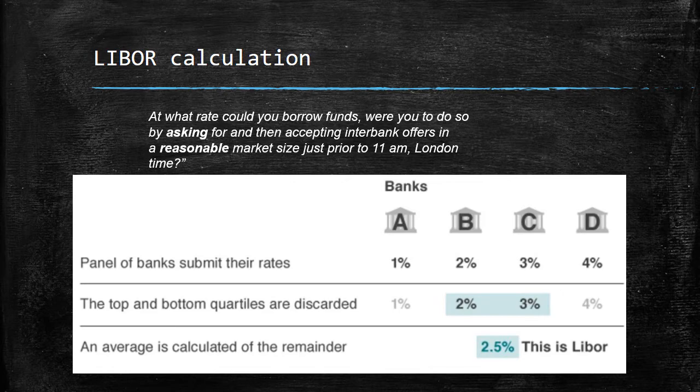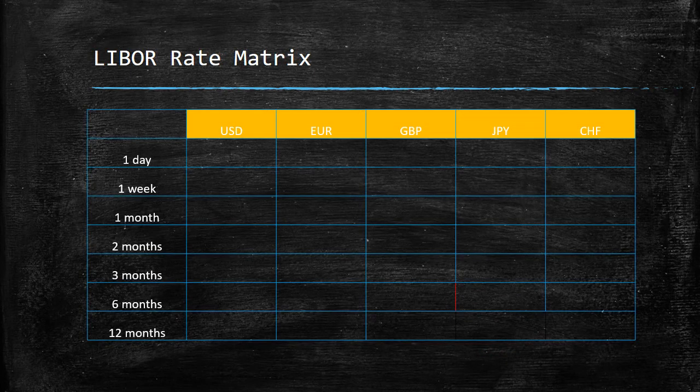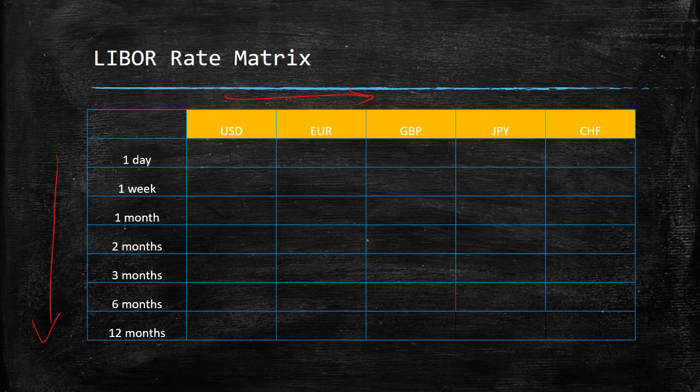To make it more complex, LIBOR is quoted in five different international currencies: USD, Euro, GBP, Japanese Yen, and Swiss Franc (CHF). Additionally, rates are calculated across different maturities — for example, what the rate would be for a one-day USD borrowing or a one-month Euro borrowing. This creates a matrix of rates. So when you ask for a LIBOR rate, you must specify both the currency and the duration, since the rate varies depending on where you are in the matrix.